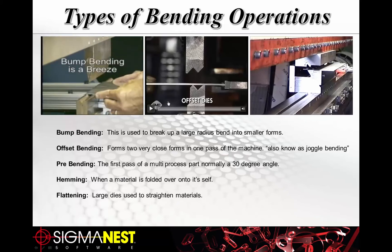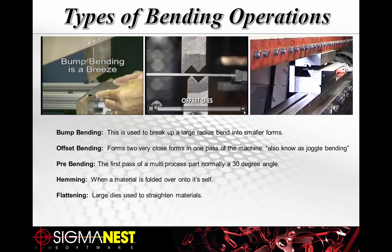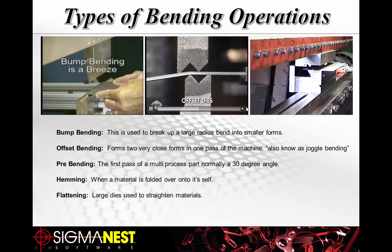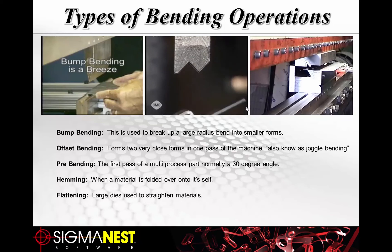Offset bending, also known as joggle bending, utilizes a different style of tool with two points of contact, effectively performing two bends at once — making a small joggle in the material so it comes out a quarter or half inch offset to the left or right. The video demonstrates the double bend, with the machine performing both bends simultaneously.